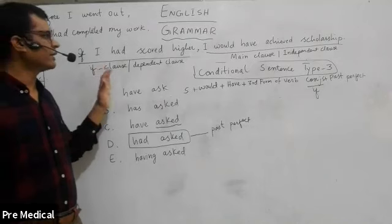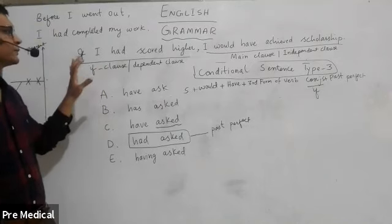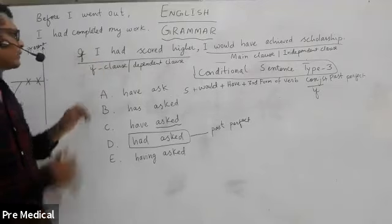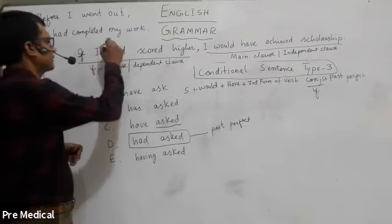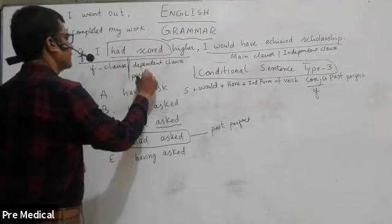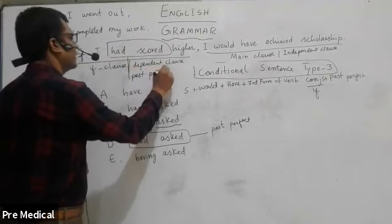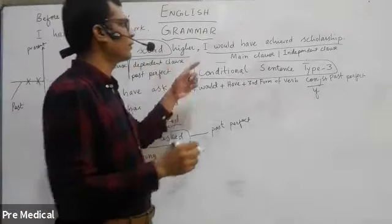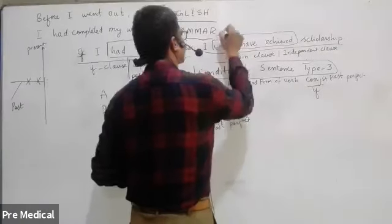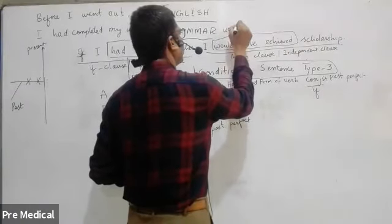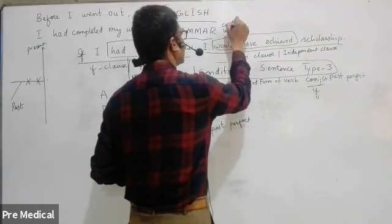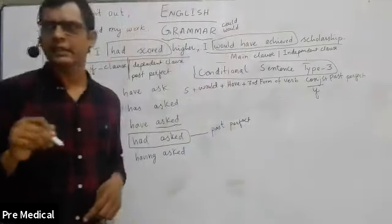So this is conditional sentence type three. With the if-clause, you have past perfect. And with the main clause, you have 'would + have + third form of verb.' There is also a possibility that 'could' or 'might' can be used in the same place, but that won't make any significant difference.